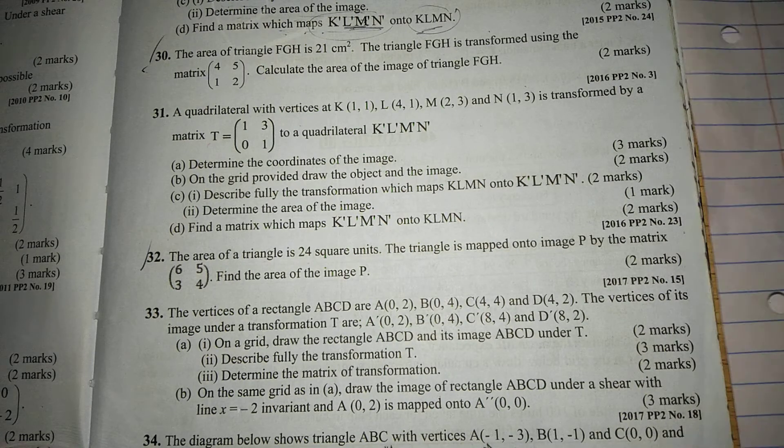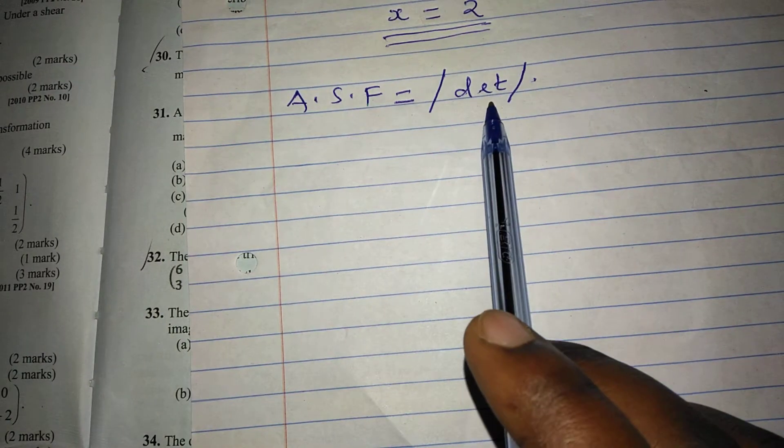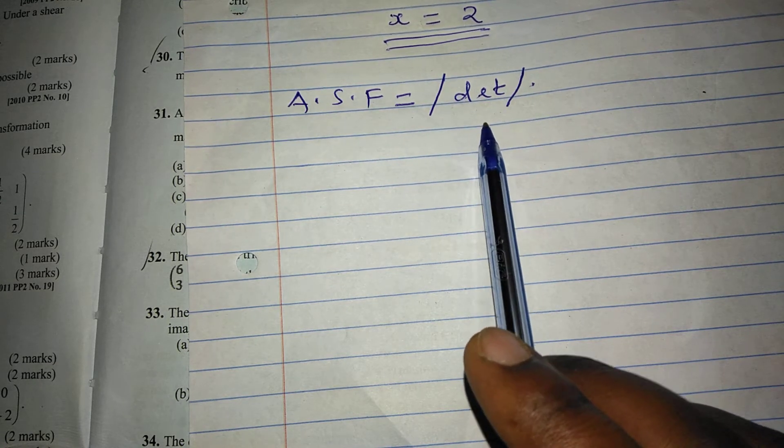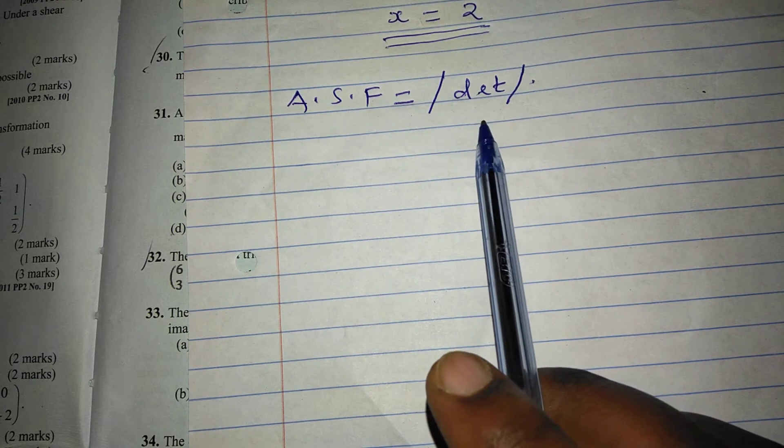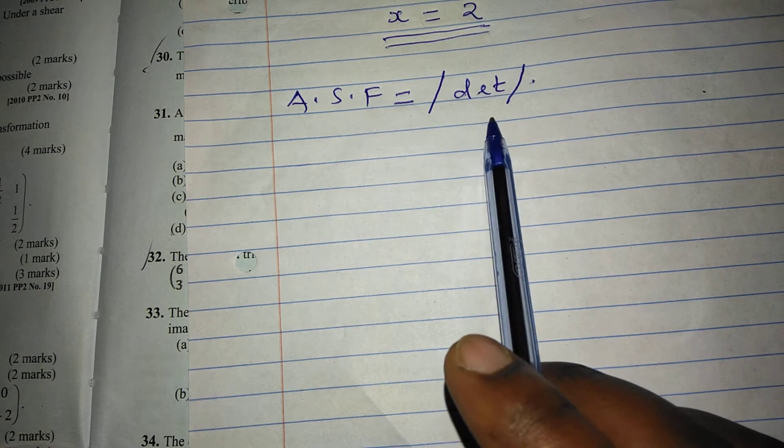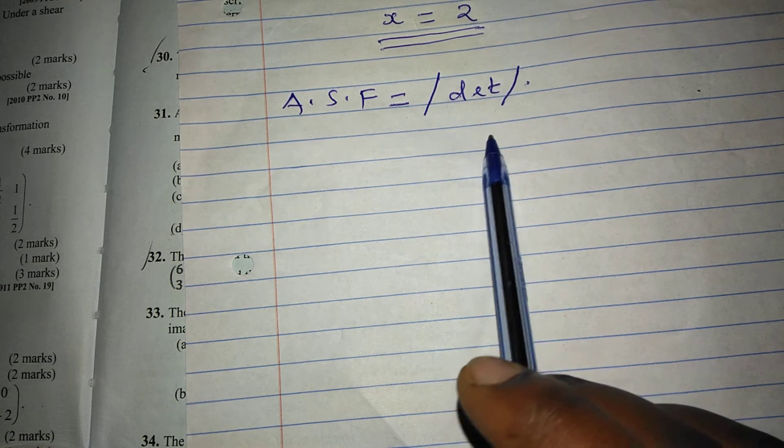We had earlier mentioned that the area scale factor is given by the absolute value of the determinant of the transforming matrix. In case we find a determinant which is negative, then the scale factor will be related to the absolute value.